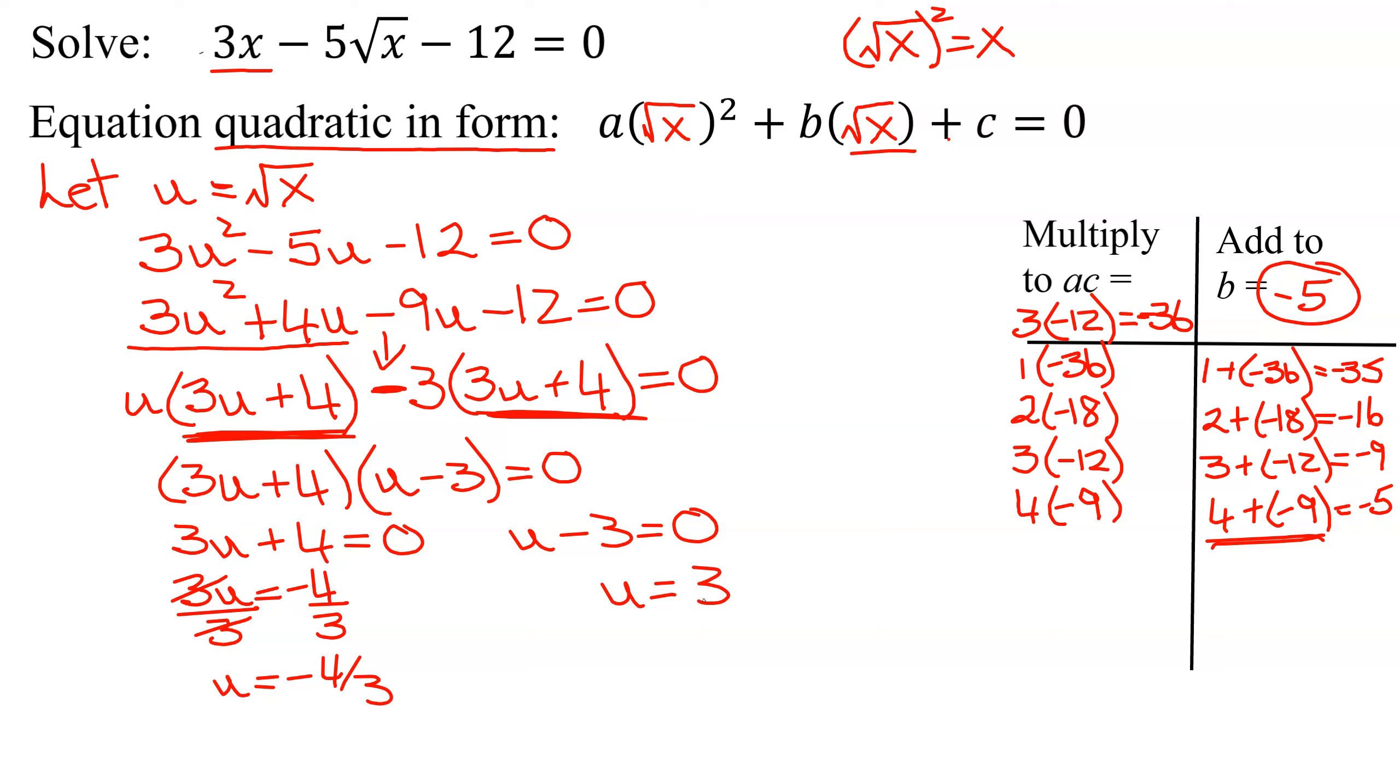But remember, we haven't solved the equation. We only found u. The problem wanted to know what x was. So u was equal to the square root of x. So we know the square root of x now equals negative 4 thirds. And the square root of x equals 3.